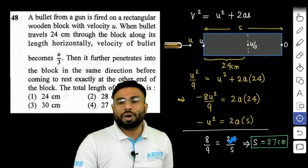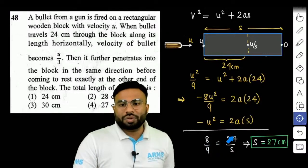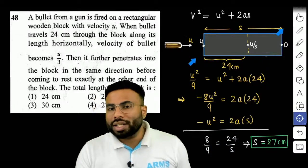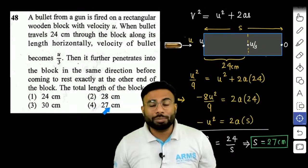पे बचेगा 24 अपॉन S. तो 8 और 24 को cancel कर यहाँ आएगा 3, 3 और 9 को multiply कर दे, तो हमारा complete block का length कितना हो जाएगा, 27 cm, which is option number 4